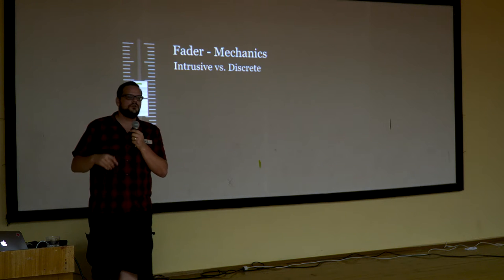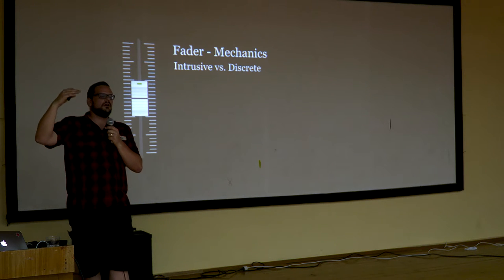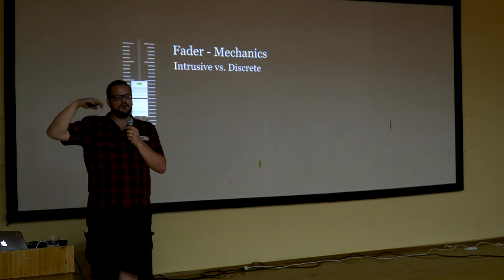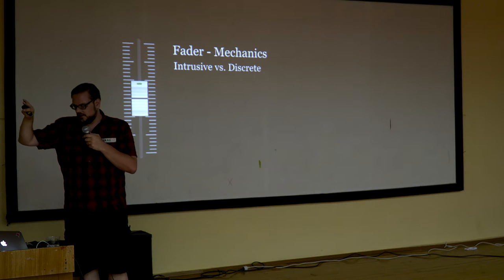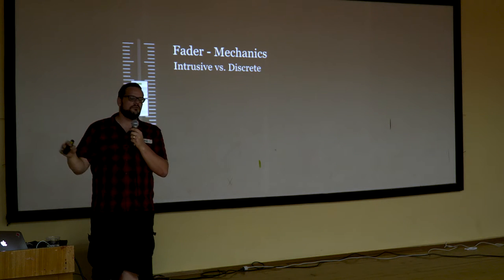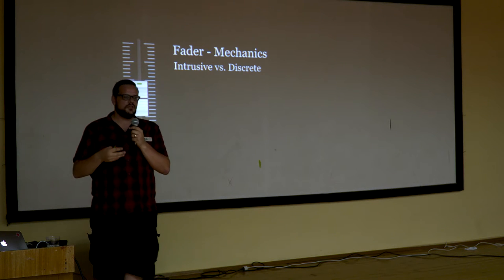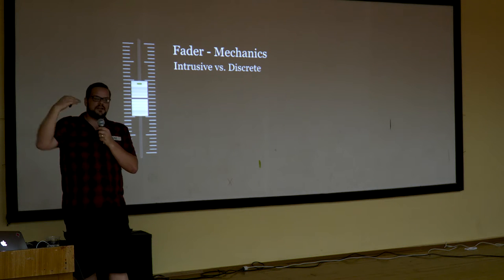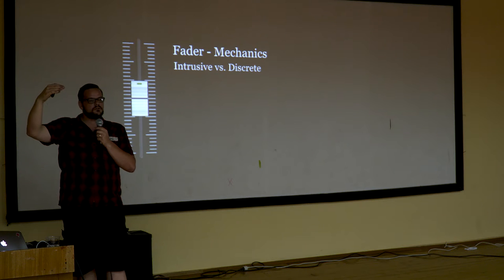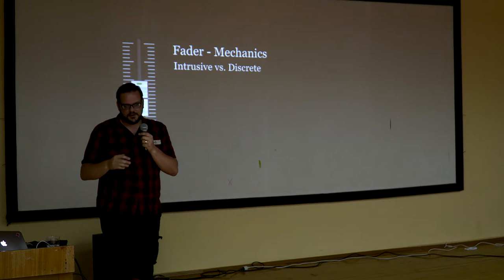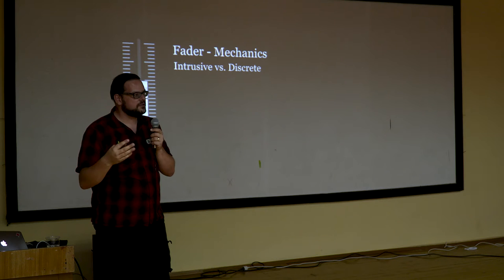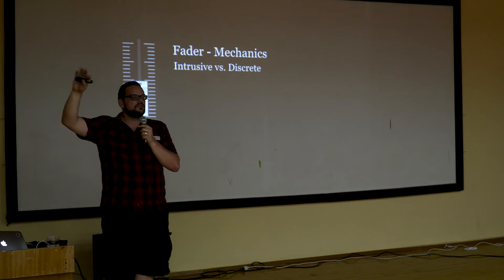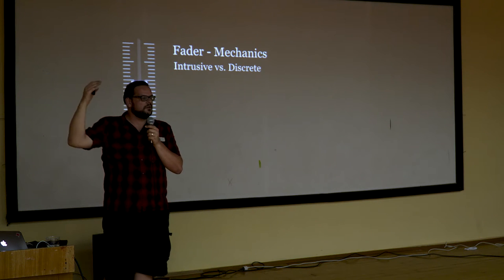Mechanics is all the stuff we do to represent things we can't do in the real world. As Jok talked about — if you can't fly, maybe you need a game mechanic to represent that. Or if we are fighting with swords, we don't use real swords because they kill you. The application of mechanics goes from intrusive to discrete. For example, if I stop the game and give information, that can be very intrusive. Or in the discrete end, you might change the lighting a little bit and that means something — very discrete.